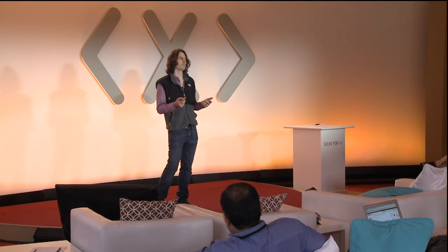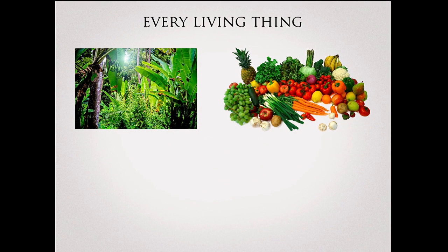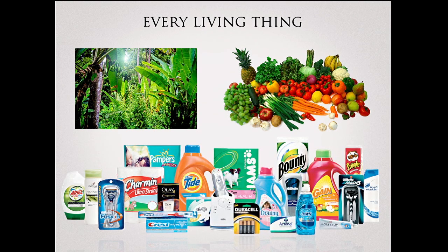The air we breathe right now was produced a long time ago by living things. These are leather — from animals. Lots of consumer products come from biology as well: plastics as well as oils, which are used to make many things, and they're all produced biologically. So it's a big thing.